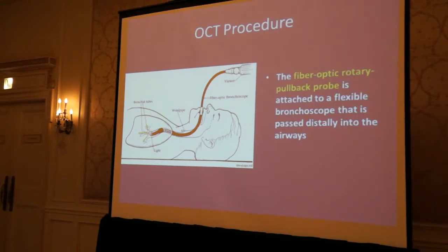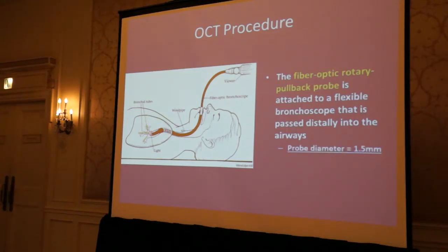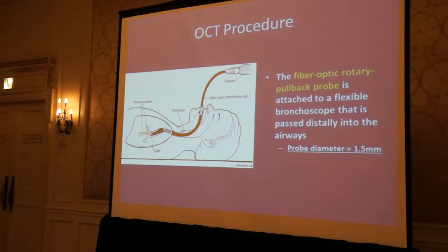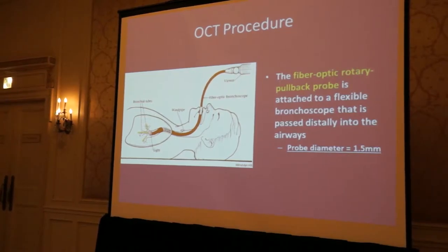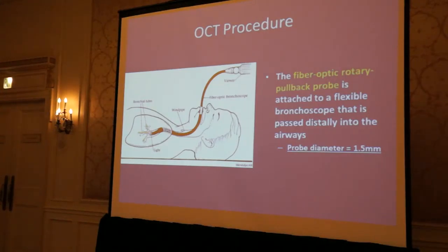Once the bronchoscope reaches the opening of the desired small airway, a probe continues to move throughout the smaller airways blindly — the doctors cannot see which branch it is moving into. Because the probe has a 1.5-millimeter diameter, it will continue into the small airway until its diameter equals that of the airway, at which point a 5-centimeter pullback occurs. During this pullback, continuous images are taken so that post-investigation 3D airway reconstruction is generated.